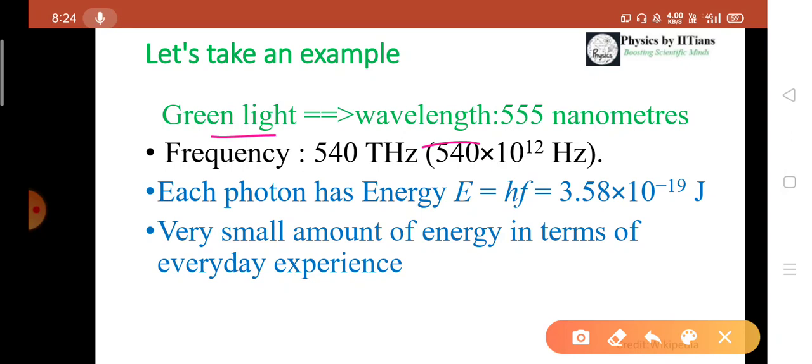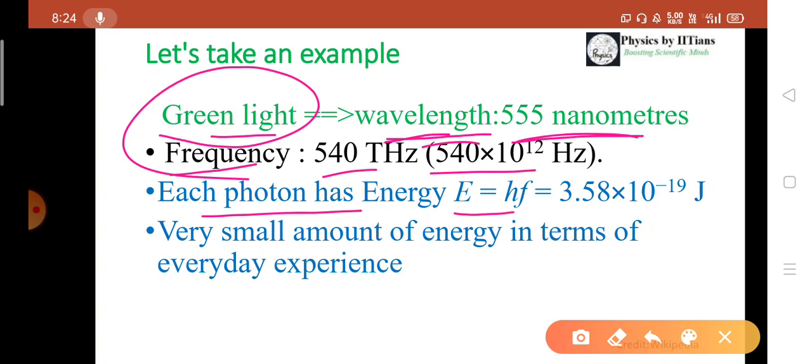The eyes can adapt this green light at the wavelength of 555 nanometers. At this wavelength, we are taking 555 nanometers for the green light. We will find out the frequency. Frequency is 540 terahertz or 540 times 10 to the power 12 hertz. How much energy does each photon carry? Each photon has energy equals to hf or hν, that is 3.58 into 10 to the power minus 19 joule.